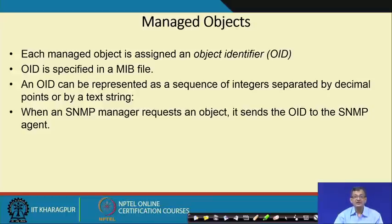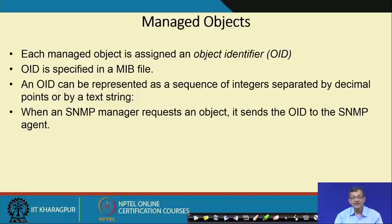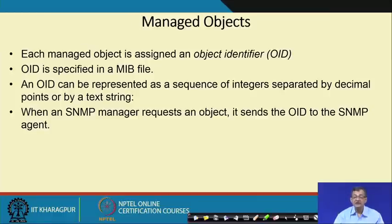Each managed object is assigned an Object Identifier (OID). The OID is specified in a MIB file and can be represented as a sequence of integers separated by decimal points or by a text string. When the SNMP manager requests an object, it sends the OID to the SNMP agent, allowing it to find the specific data or manageability information needed.